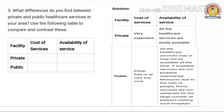Question 3. What difference do you find between private and public health care services in your area? Use the following table to compare and contrast. Private: Very expensive. Availability of services — all the health care services are easily available. Public: Either free or at very low cost. Availability of services — all the health care services may or may not be available all the time. If available, special services are not properly maintained. Moreover, due to the rush of people, these services are not adequate for the large number of patients visiting such hospitals.